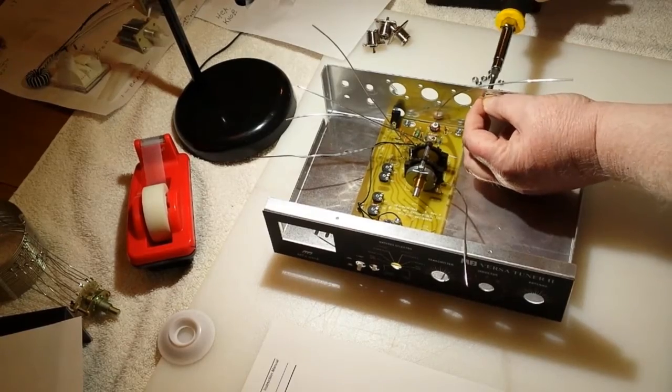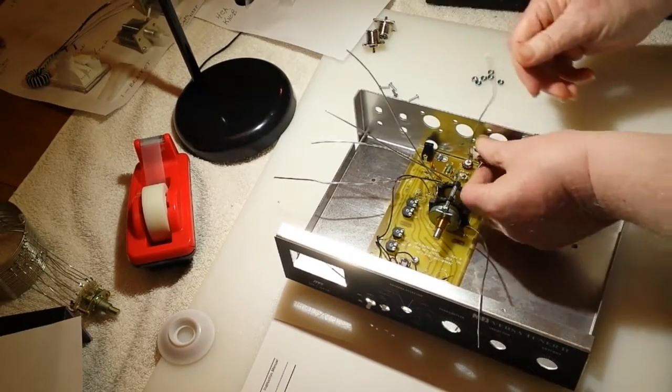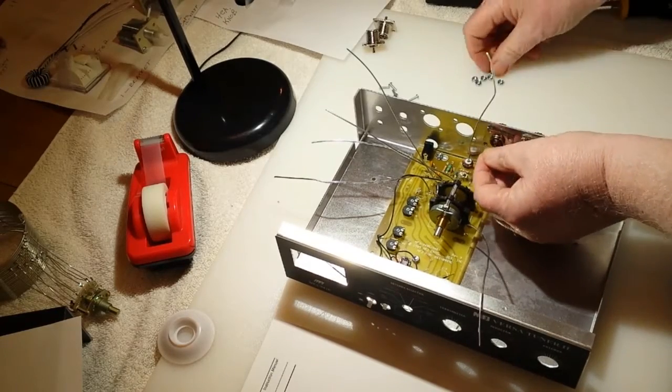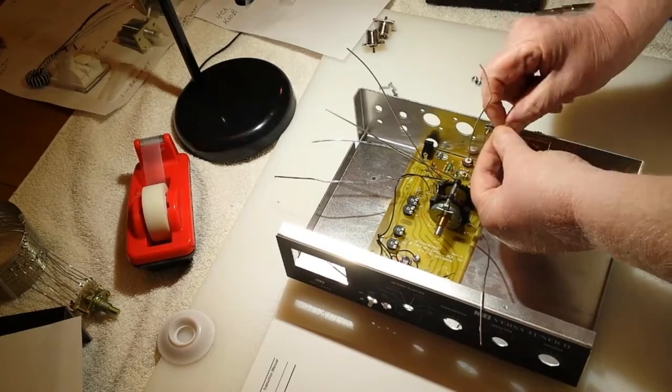Here I'm showing you my build of the MFJ941 EK antenna tuner. At this point we're putting on the connectors on the back of the case.